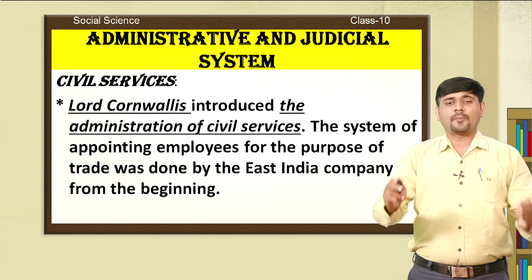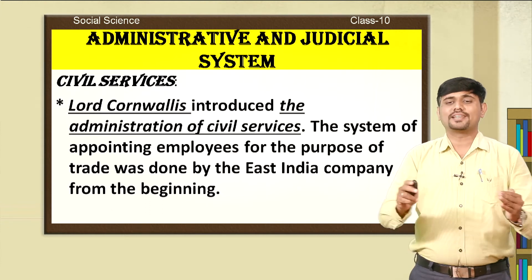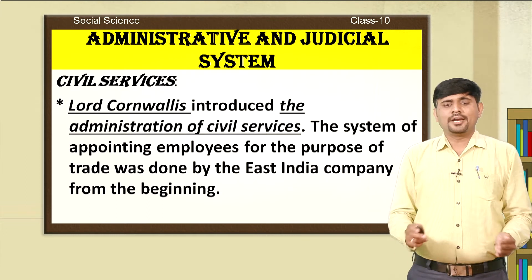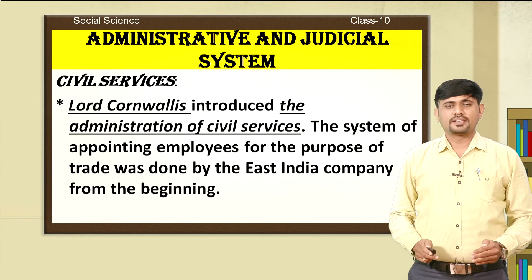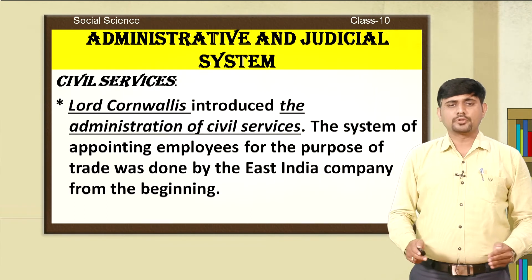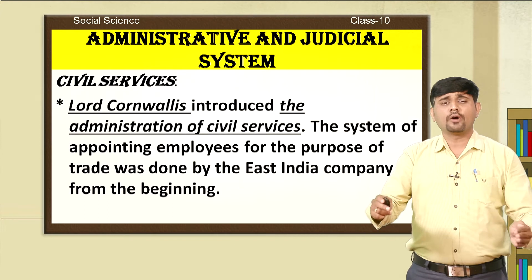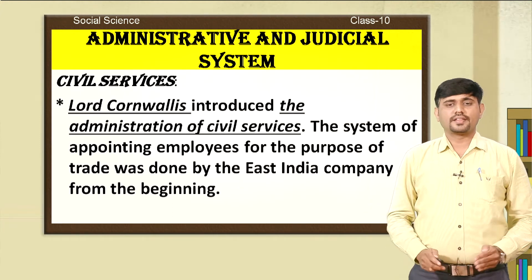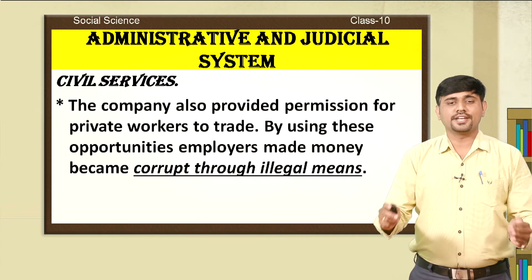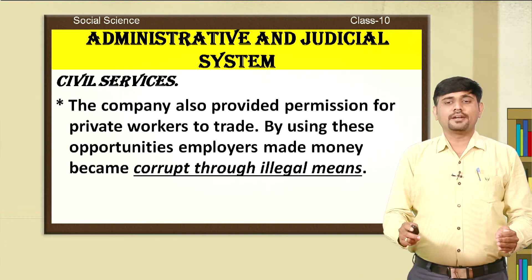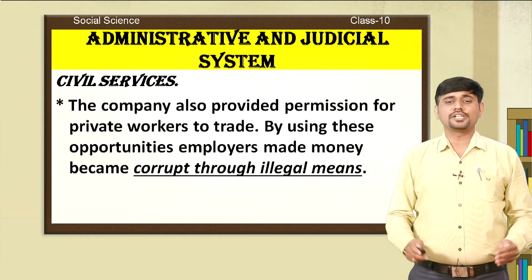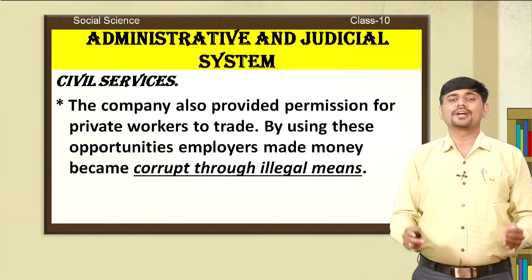The system of appointing employees for the purpose of trade was done by the East India Company from the beginning. Lord Cornwallis, eminent Governor General of the British East India Company, was appointed in the year 1786 as the Governor General of India. He came to India and made several reforms in the Indian administration system. He was called the father of civil services in India. The company also provided permission for private workers to trade, and by using these opportunities, employers made money and became corrupt through illegal means.